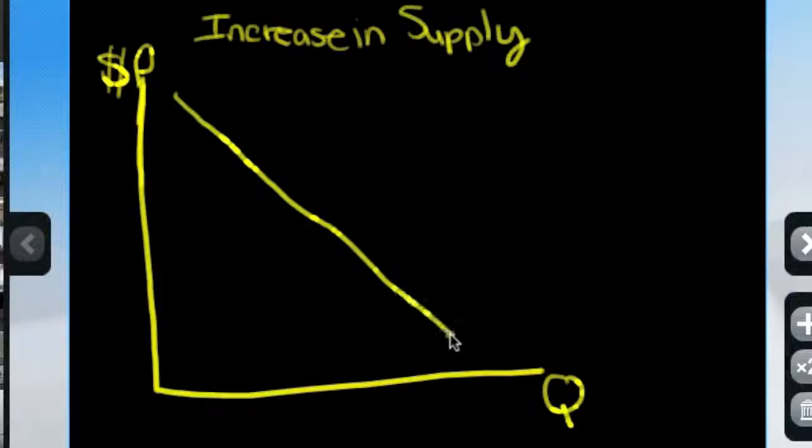So let's say for some reason there is an increase in the number of suppliers of tires. So if this is our downward demand and this is our supply,